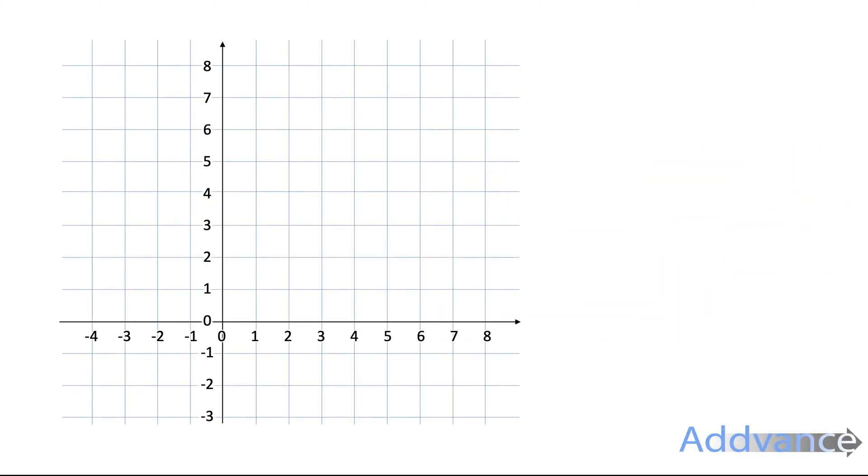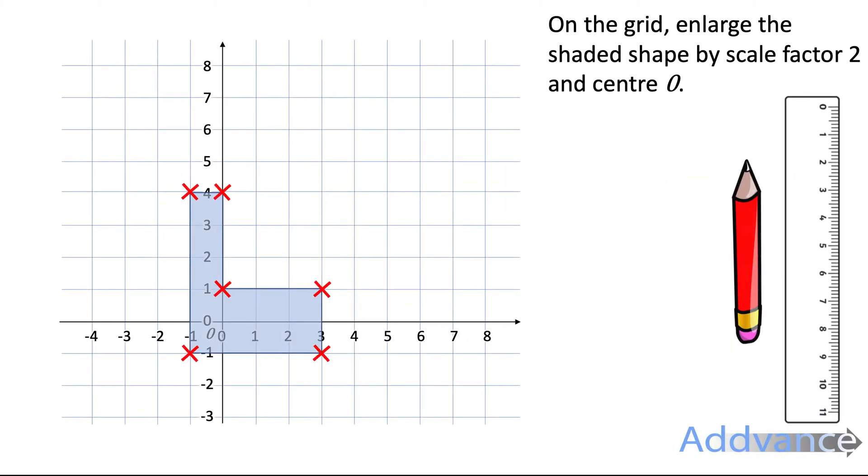We're going to look at some questions. The first one is we've got this shape on the grid and we're going to enlarge it by scale factor 2 and the centre of enlargement is the origin. This symbol O just means the origin which is 0,0.